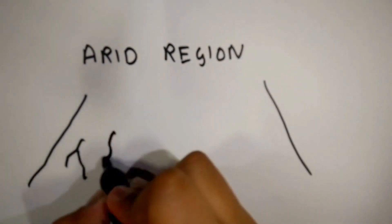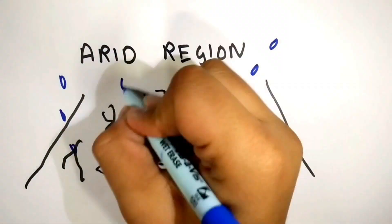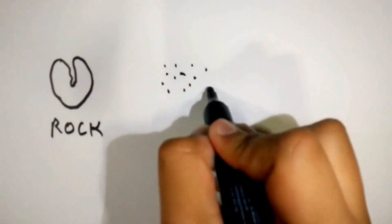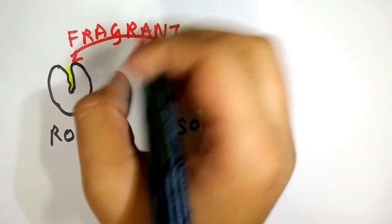The smell of rain is particularly observed in predominantly arid regions and is associated with the first rains after drought. Rocks and soil in such arid or semi-arid regions develop and trap fragrant oils in them.